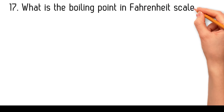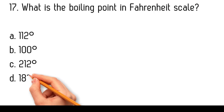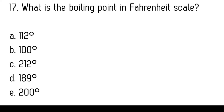What is the boiling point on the Fahrenheit scale? One hundred and twelve degrees, one hundred degrees, two hundred and twelve degrees, one hundred and eighty-nine degrees, two hundred degrees. The boiling point of water on the Fahrenheit scale is two hundred and twelve degrees.